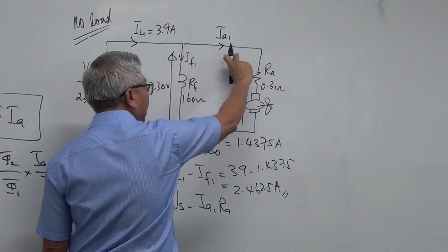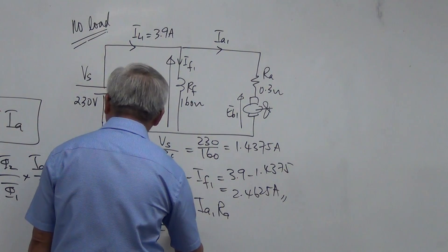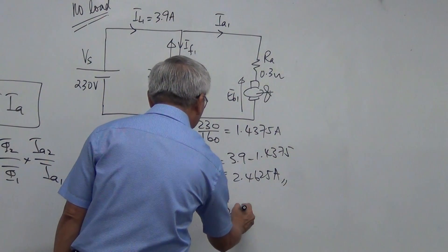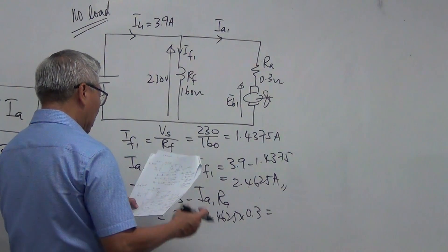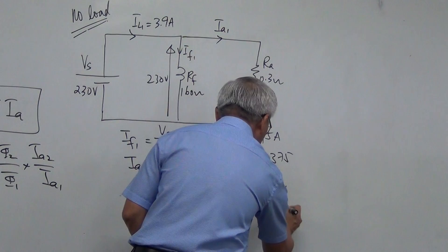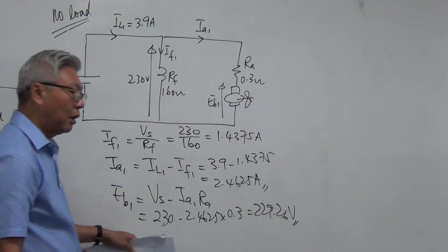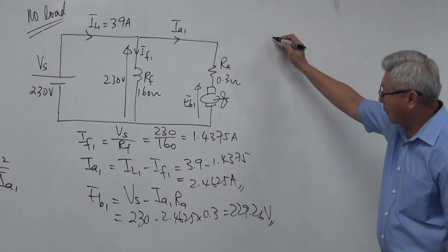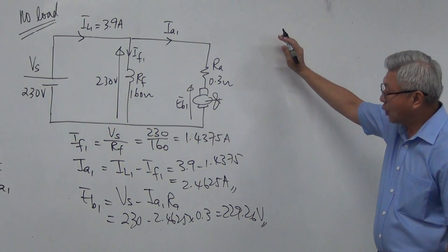So it is therefore equal to 230 minus 2.4625 times 0.3. And I get Eb1 that is equal to 229.26 volts. And with that, then I'll go on to calculate my power developed. Okay, there's no need. So now let's move on to the full load.